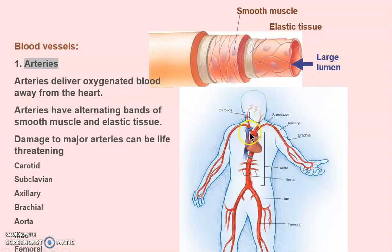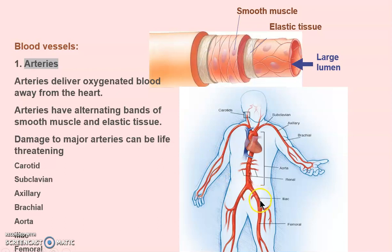Arteries are important because they are under enormous pressure. The heart pumps blood through the subclavian (under the clavicle), axillary (armpit), brachial (arm), then into the aorta, descending aorta, abdominal aorta, renal arteries to the kidneys, iliac arteries, and femoral to the legs. This is why a femur fracture is considered a hazardous condition — if the sharp bone ends tear an artery, there is massive blood loss.